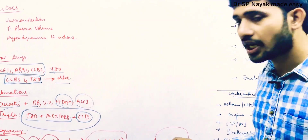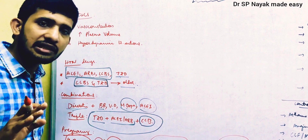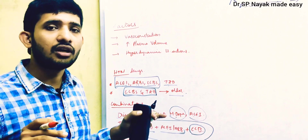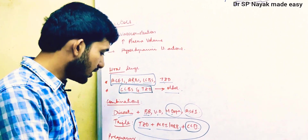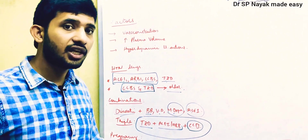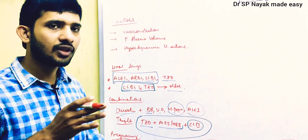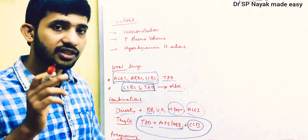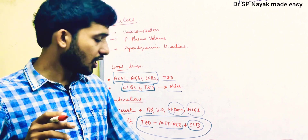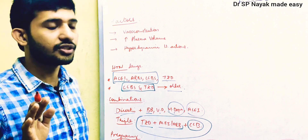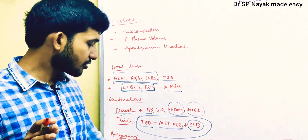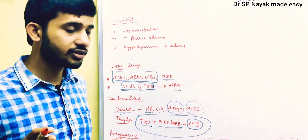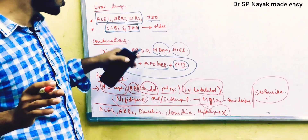ACE inhibitors and ARBs are strictly contraindicated in pregnancy due to their high teratogenic property. Diuretics and clonidine are also contraindicated — clonidine is a centrally acting drug and is not safe in pregnancy despite being grouped with methyldopa. Hydralazine is also strictly contraindicated in pregnancy. So ACE inhibitors, ARBs, diuretics, clonidine, and hydralazine are all strictly contraindicated in pregnancy.